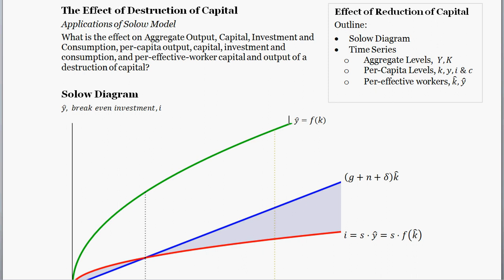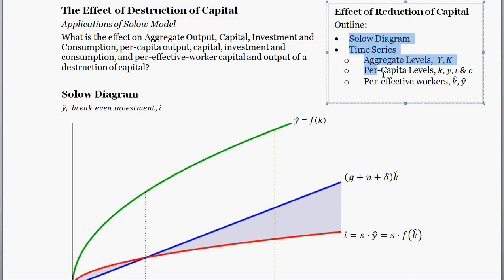We're going to see the effect of a destruction of capital. This is an example where we're looking at convergence dynamics. We'll start off with analysis using the Solow diagram, look at some of the equations, and then go through time series of each of these variables.